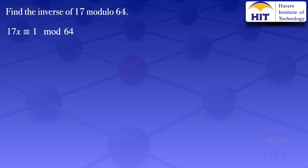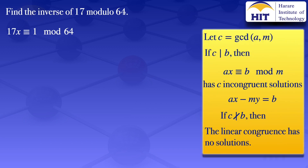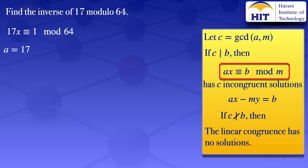To solve linear congruences, we have to look at the following information. If C is the greatest common divisor of A and M, and if C divides B, then Ax congruent to B modulo M has C incongruent solutions. Comparing with our linear congruence, we see that A is 17, B is 1, M is 64, and C is the greatest common divisor of A and M, which is the greatest common divisor of 17 and 64.